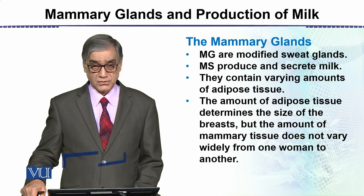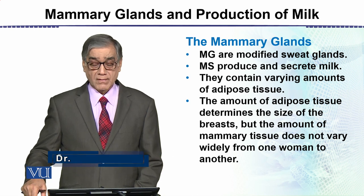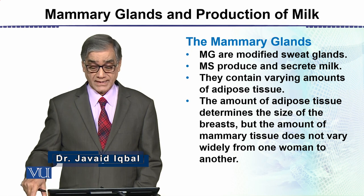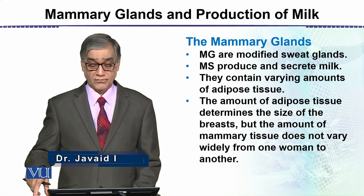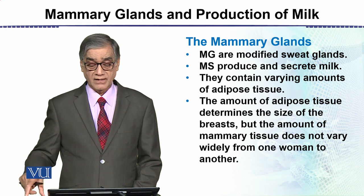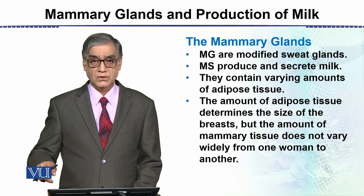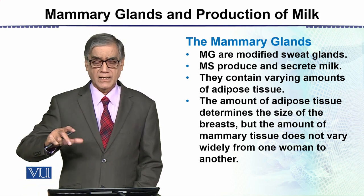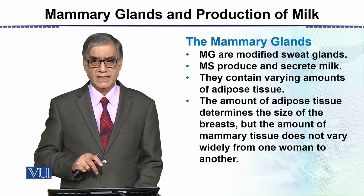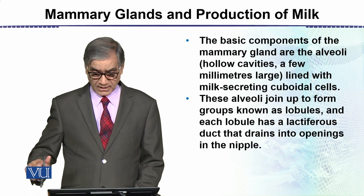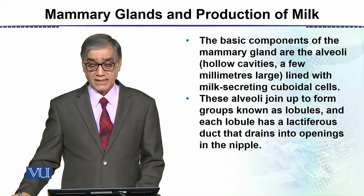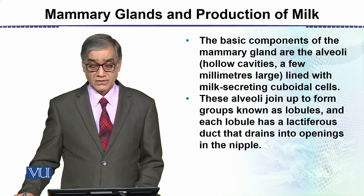The mammary glands contain varying amounts of adipose tissue. The amount of adipose tissue determines the size of the breasts, but the amount of mammary tissue does not vary widely from one woman to another. So the size of the mammary glands depends on the adipose tissue.